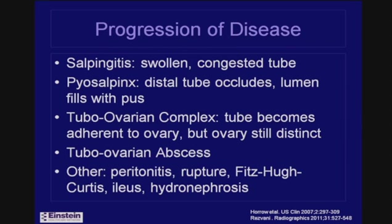As the disease worsens, salpingitis — an inflamed, swollen tube — can progress to an obstructed tube filled with pus, called a piosalpinx. If the pus leaks out and the ovary becomes adherent to the tube in one structure, this is a tubo-ovarian complex, where the ovary is still distinct and can be measured. Eventually the abscess involves the ovary to the point where tube and ovary can no longer be distinguished, and the whole structure is called a tubo-ovarian abscess.